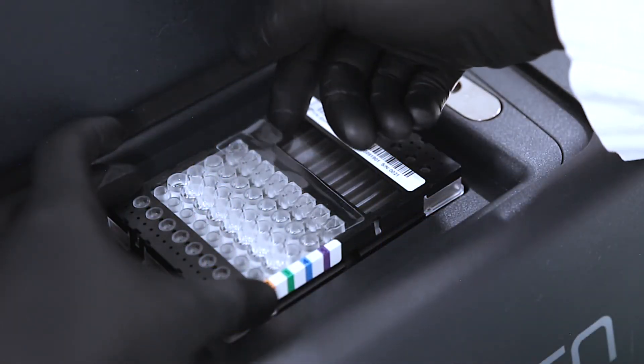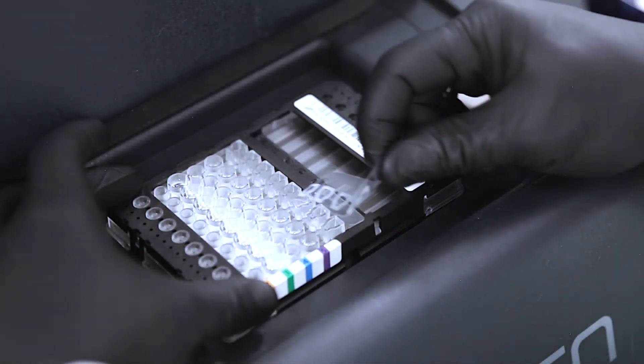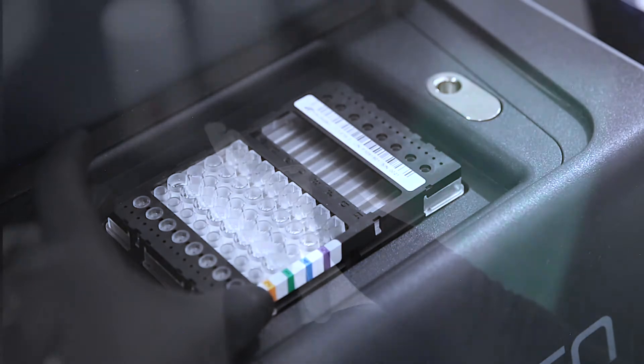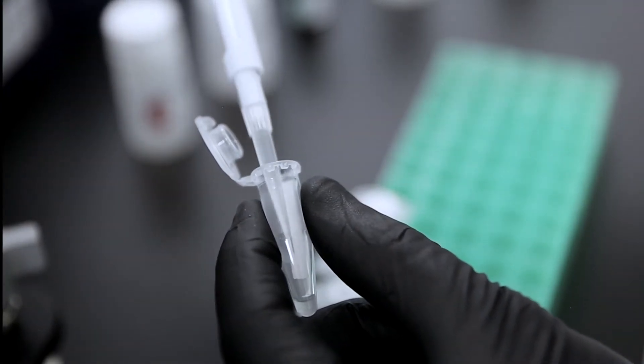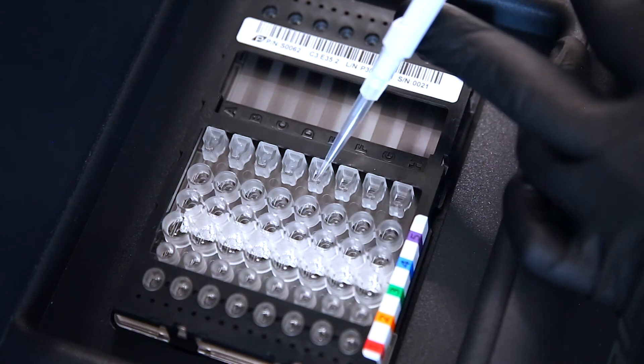To load sample into the fluidic chip, the protective film is removed from the sample wells. Then, 200 microliters of each sample are dispensed into each sample well of the fluidic chip.